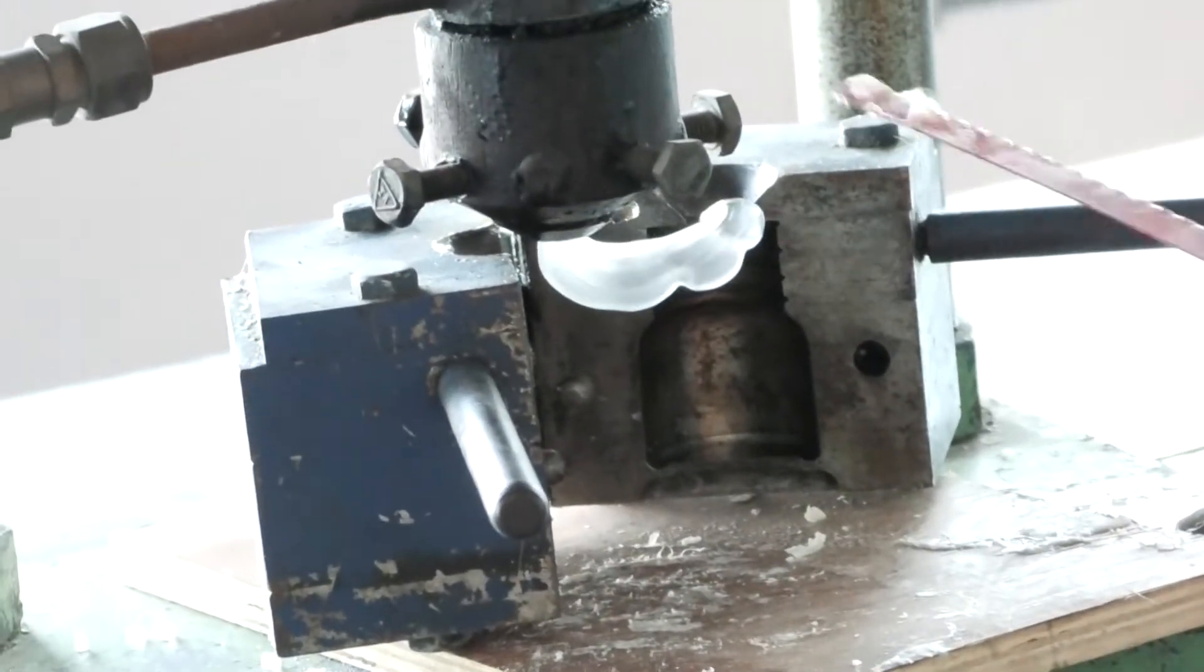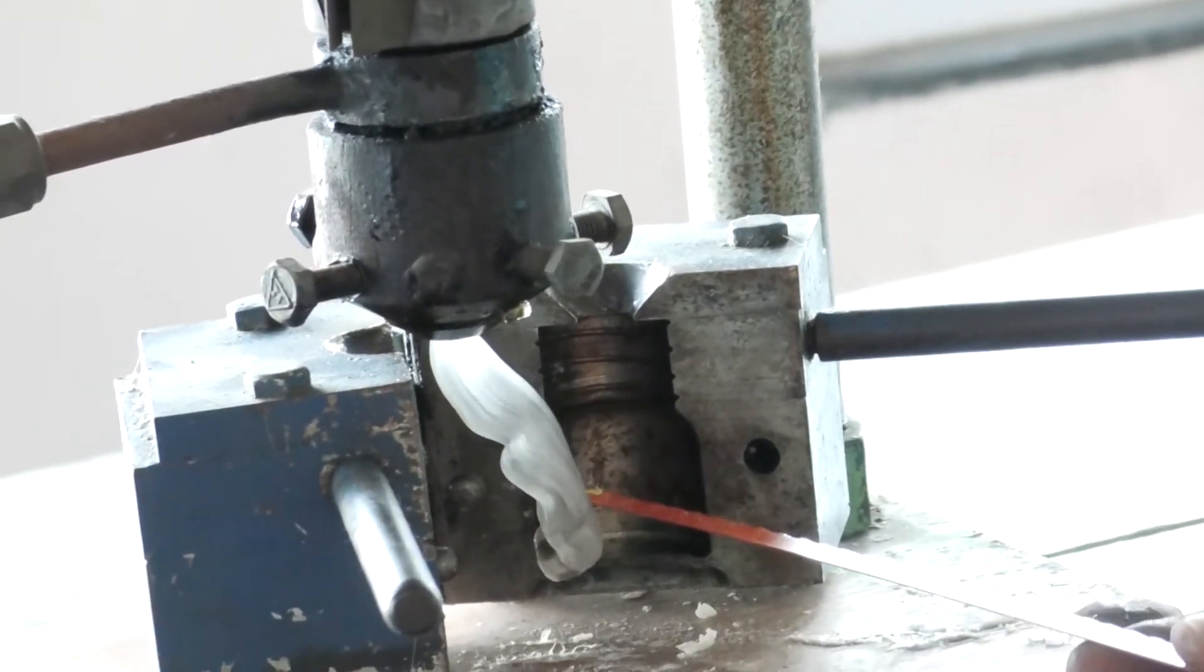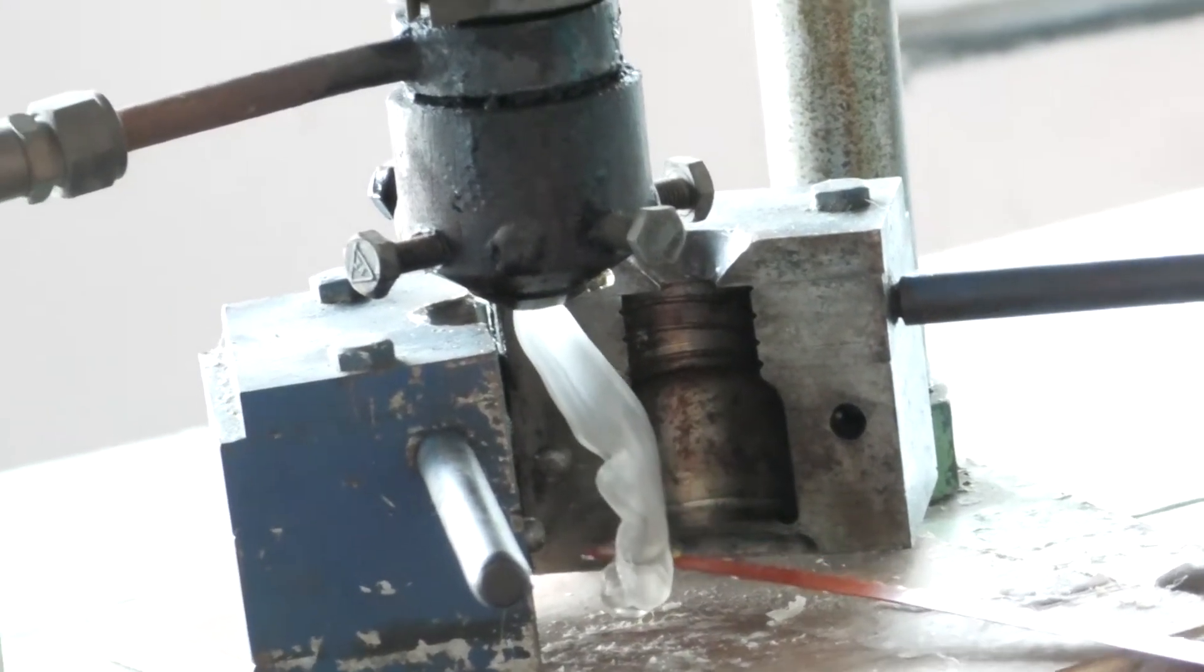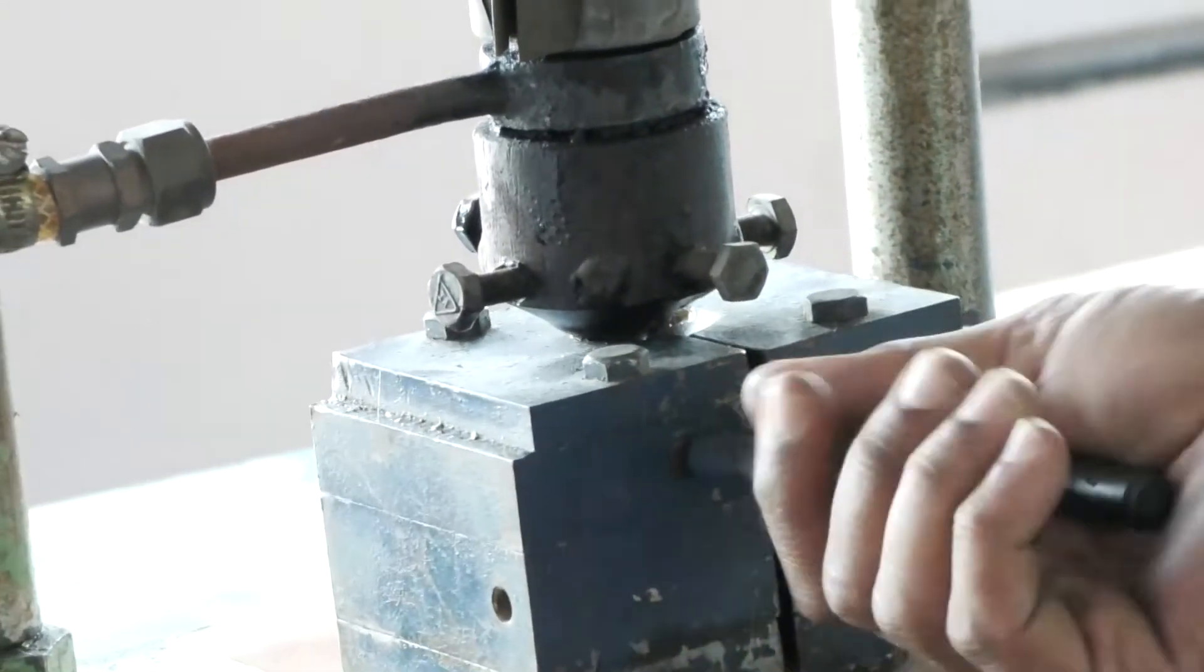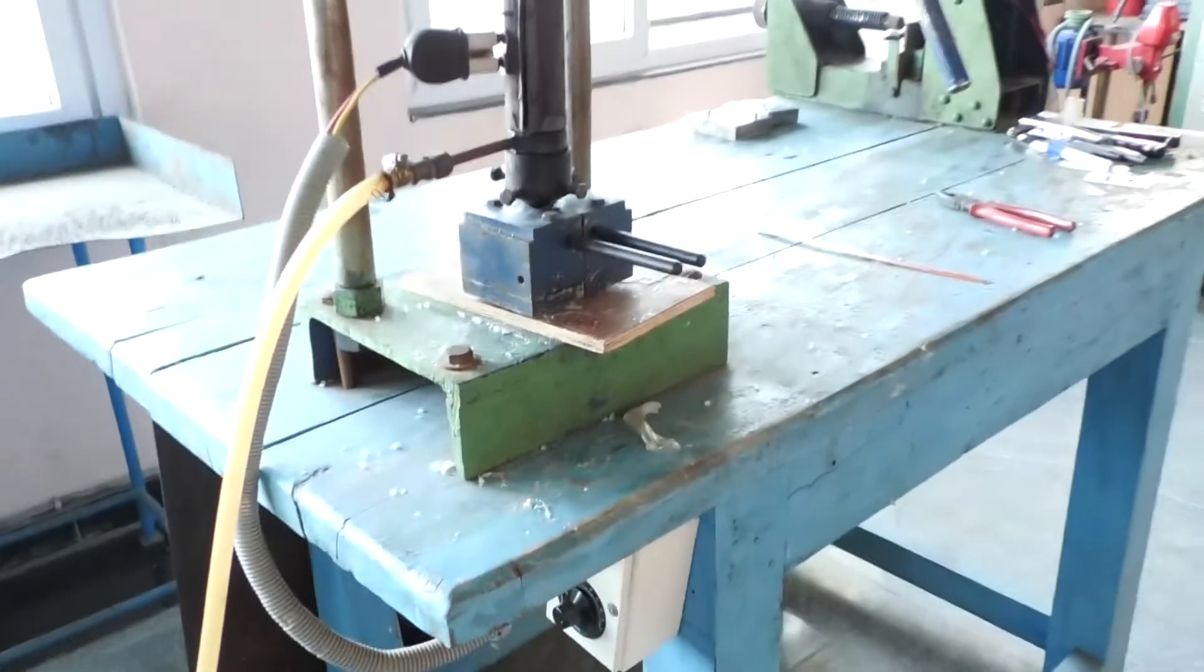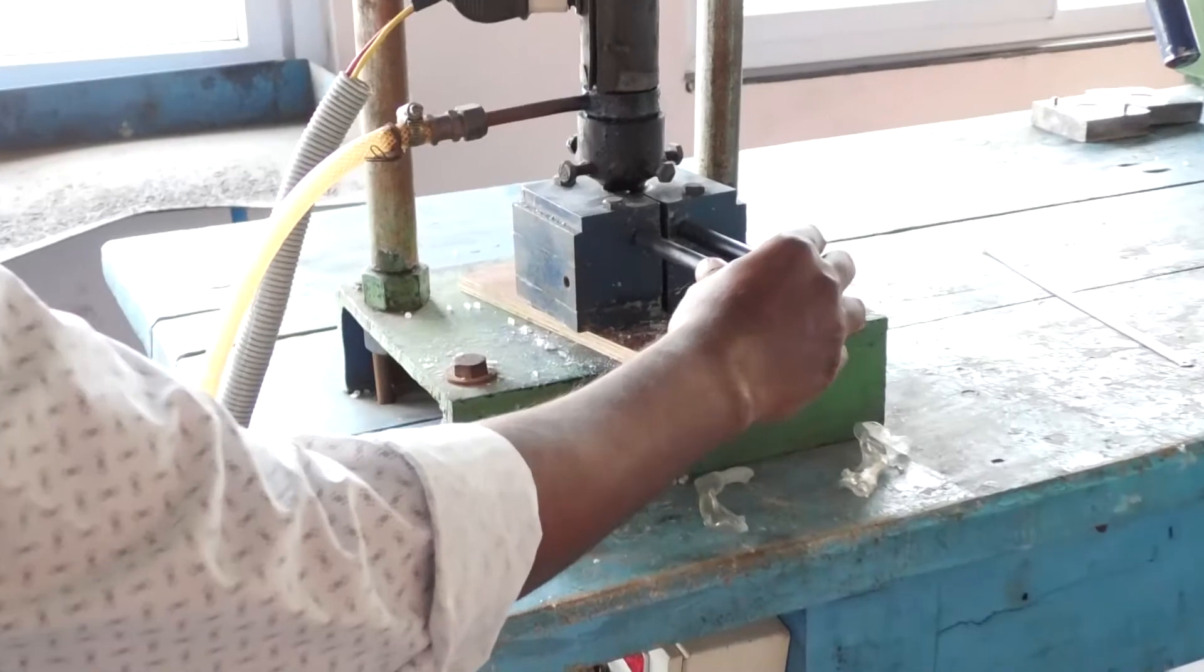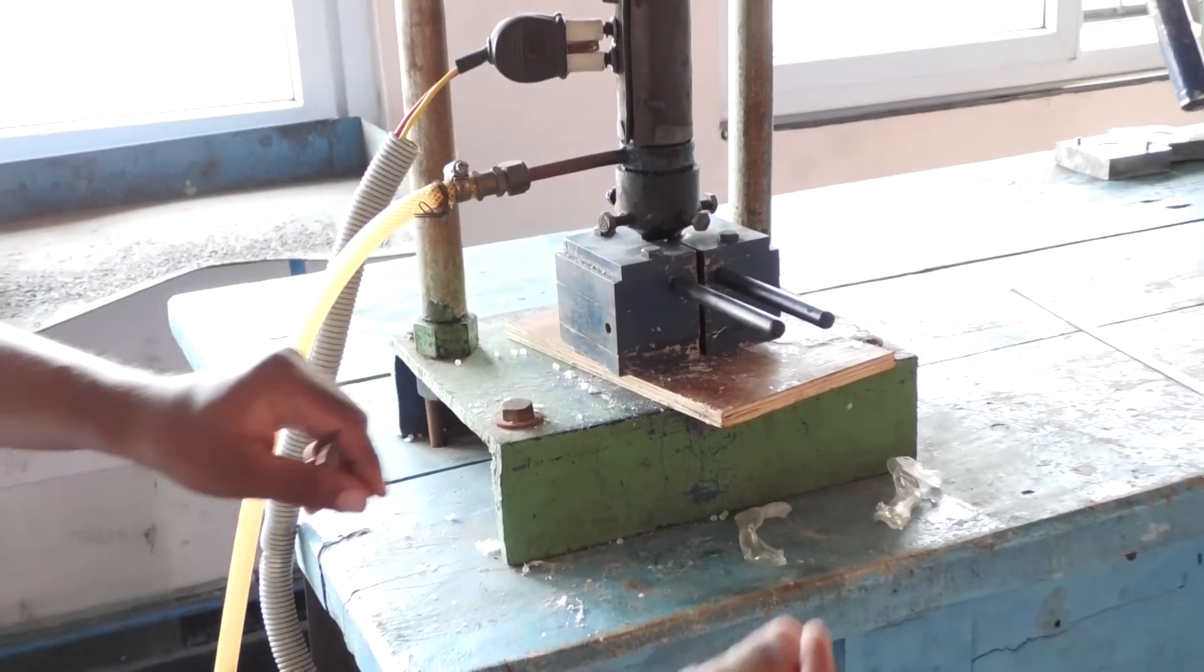It will go into the die and we will get the hollow bottle shape. Once you close the die, turn on the air compressor. Now after completing the air compression process.